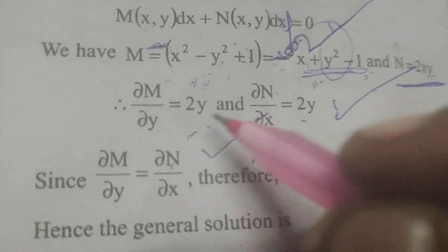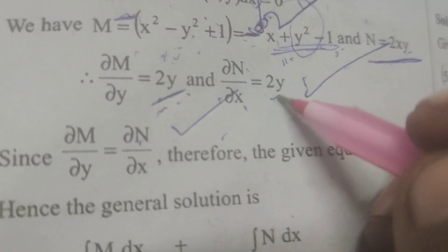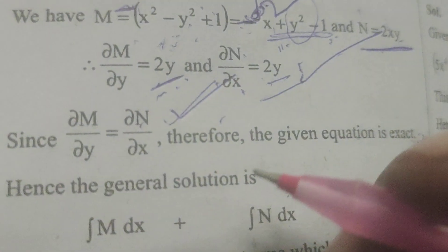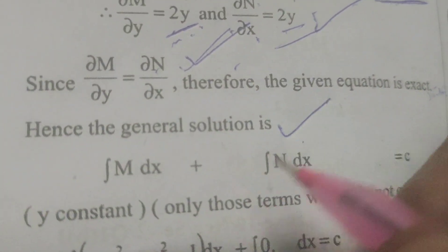Therefore, ∂M/∂y = 2y and ∂N/∂x = 2y. Since ∂M/∂y equals ∂N/∂x, the given equation is an exact differential equation.